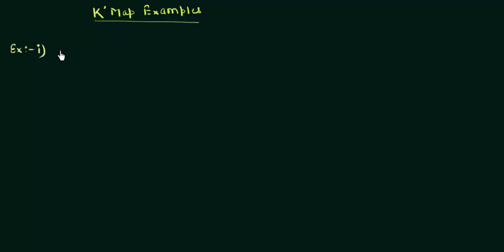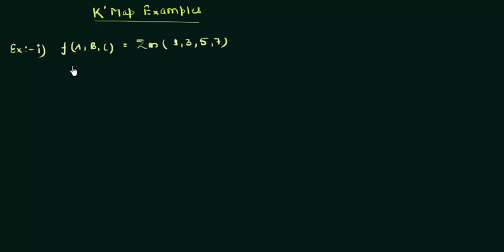Example number one: I am doing the example with three variables first, which will help you understand the topic in a much better way. We are having A, B, C as the three variables, with the function F(A,B,C) = summation of m(1, 3, 5, 7). This representation is something familiar — we already discussed it when studying the SOP and POS form.